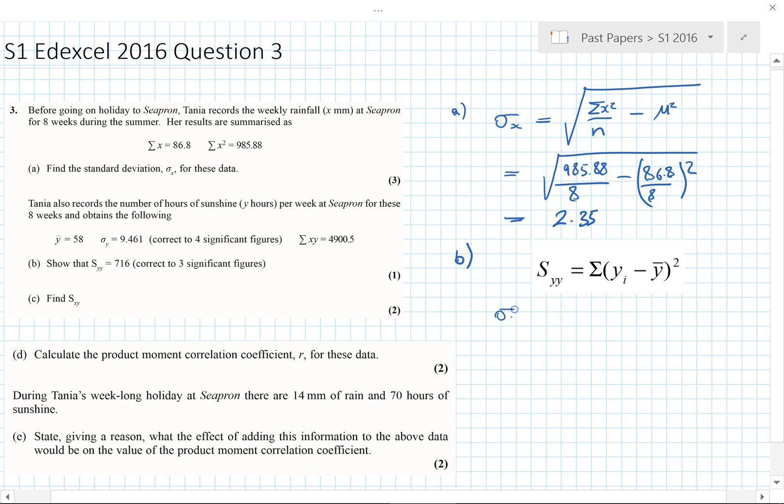But we also know that the standard deviation, supposedly an alternative formula to this one, don't use it very often, but we actually get to use it twice in this paper. It's the sum of the squares of the deviations from the mean, divided by the number. We need to work out SYY of 716. Well that basically means this bit here is SYY. So that means SYY is equal to N, which in this case is 8, times by the standard deviation, which is 9.461.